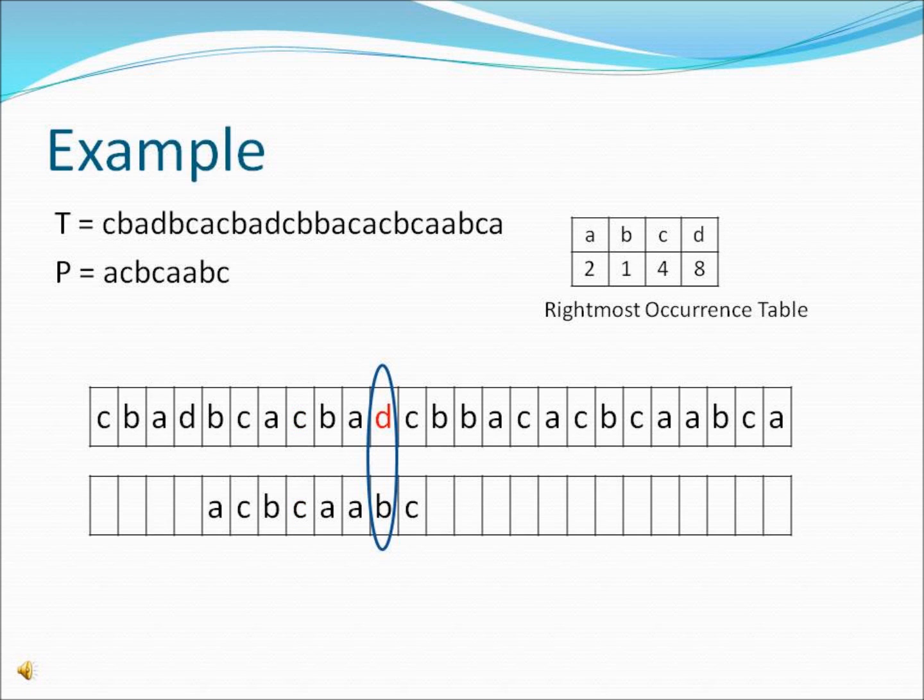Now there is a mismatch between D and B, so the pattern P is shifted along eight places to the right, as indicated by the table entry for D. The algorithm continues, checking whether P is a match, and then shifting P along according to the numbers in the table.